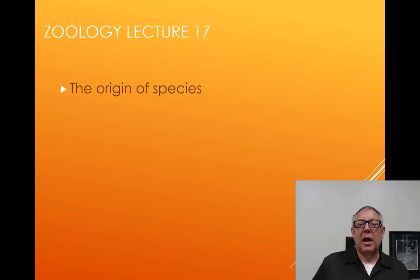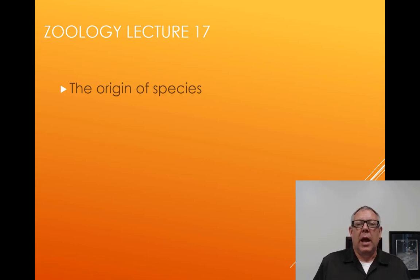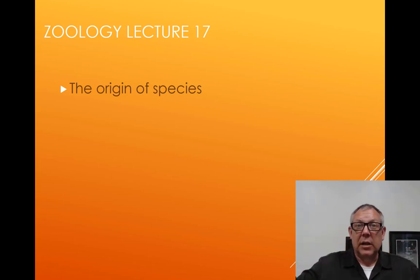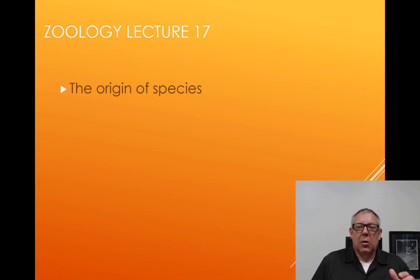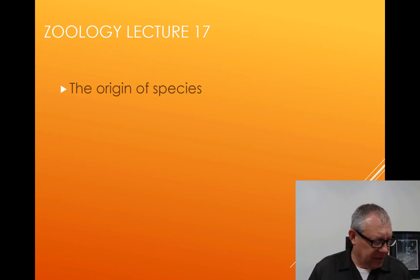We've spent a lot of time talking about evolution, natural selection, and that process. Ultimately, we're trying to explain the diversity we see in modern times. From where do we get all these species? An important consideration is: how does a new species form? We've talked about what species are, but how do you get a new species?